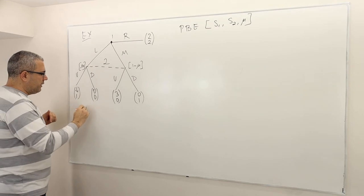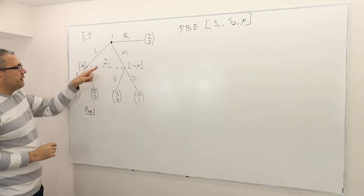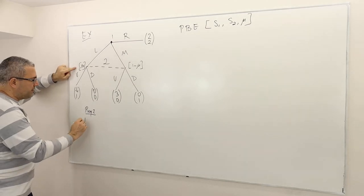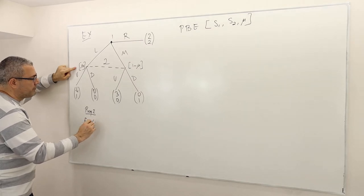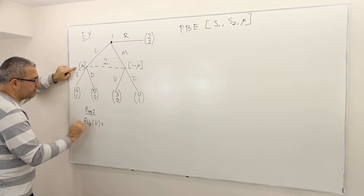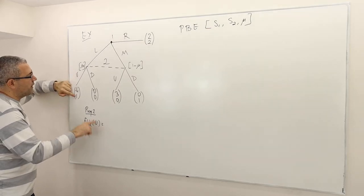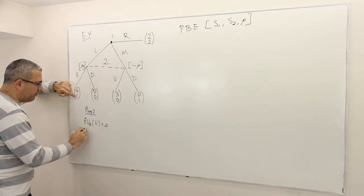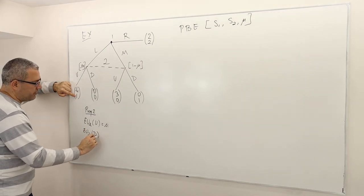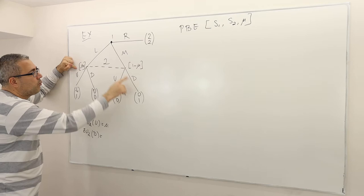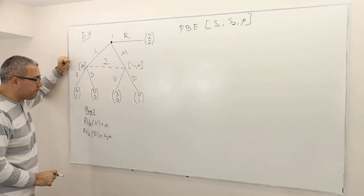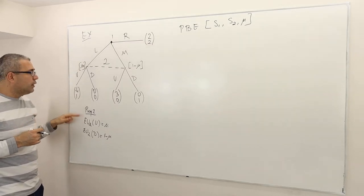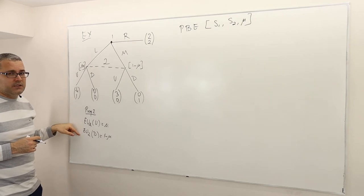I'm going to use requirement two, because player two should be choosing optimally given her beliefs. The expected payoff of player two if she chooses U is one times mu plus zero times one minus mu, so it's just mu. The expected payoff if she chooses D is zero times mu plus one times one minus mu, so it's just one minus mu. That means sometimes, depending on the value of mu, U is the best response, and sometimes D is the best response. So this question is going to be a bit more complicated than the previous one.